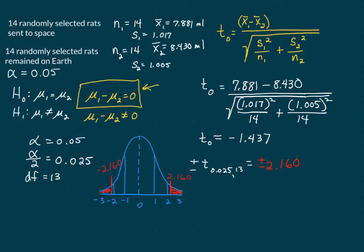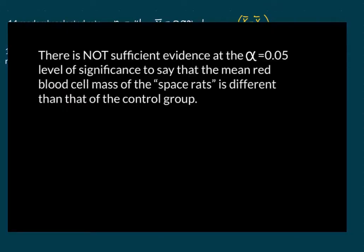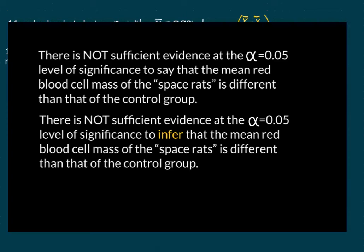Where is our test value? Our test value is negative 1.437, so it falls somewhere between the two critical values — not in the critical area. Therefore there is insufficient evidence to say that the means of the populations are different. There is not sufficient evidence at the alpha equals 0.05 level of significance to say that the mean red blood cell mass of the space rats is different than that of the control group.